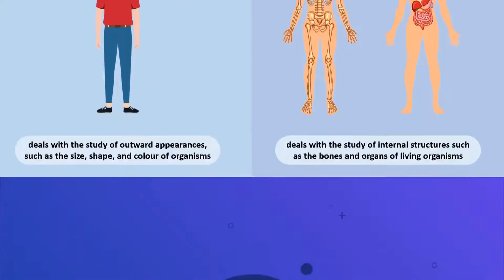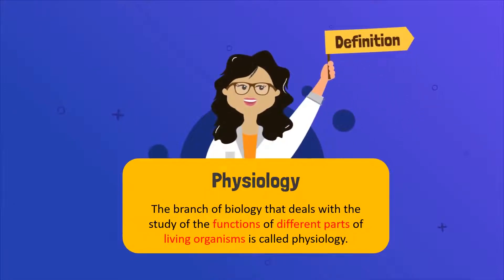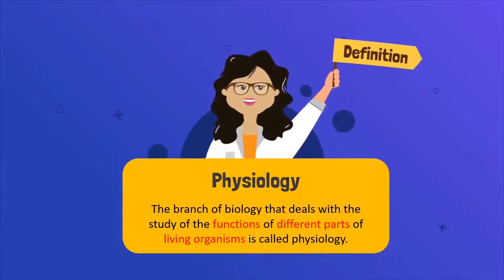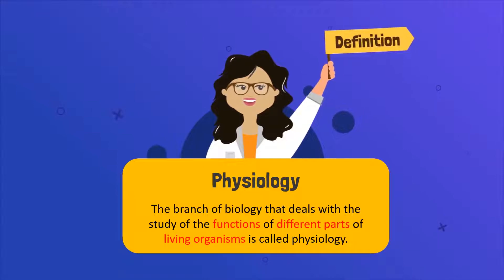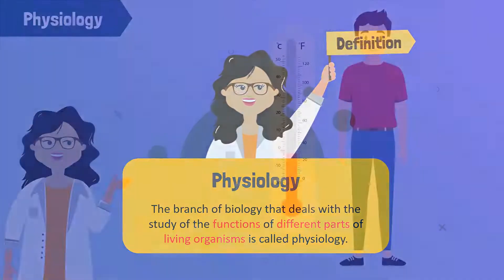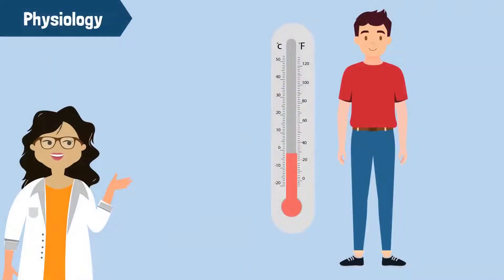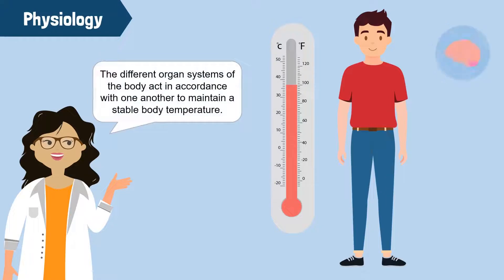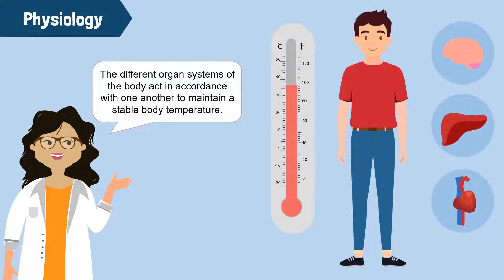The branch of biology that deals with the study of functions of different parts of living organisms is called physiology. For example, understanding how humans maintain a constant body temperature of 37 degrees Celsius. The different organ systems of the body act in accordance with one another to maintain a stable body temperature.